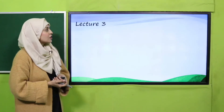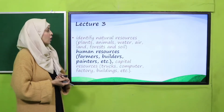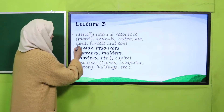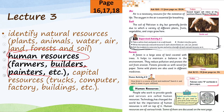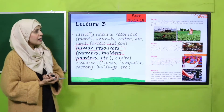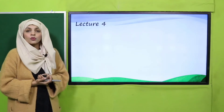Then we will move towards lecture number three. Students here will be able to understand what human resources are — for example, farmers, builders, and painters. The pages included are page number 16, 17, and 18.